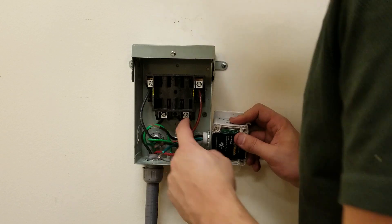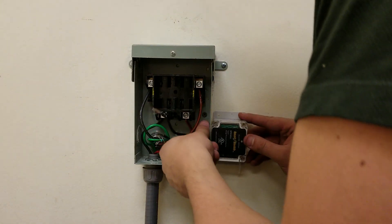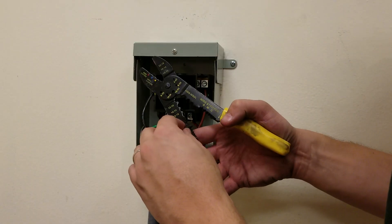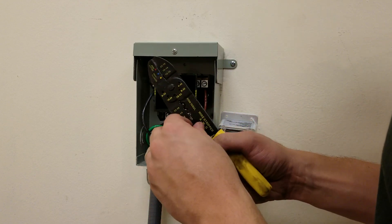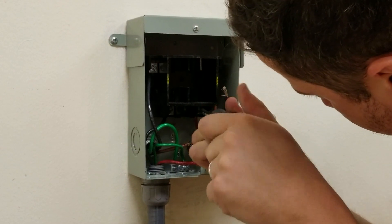Secure the SPD to the disconnect box tightly using the threaded ring nut. Strip the ends of the connecting wires. Connect the SPD to the terminals of the disconnect box.